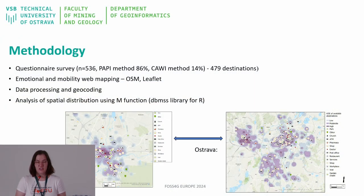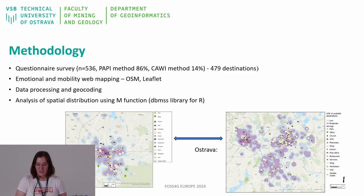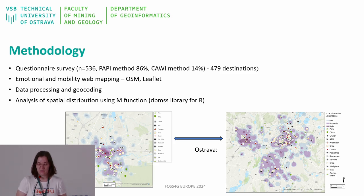Specifically focusing on the mobility goals of seniors in Ostrava and Hradec Králové, we employed a mixed method approach combining traditional pen and paper interviews and computer assisted web interviews with emotional and mobility web mapping. The data were processed using geocoding and various methods to ensure accuracy, including spatial distribution analysis using the M function.